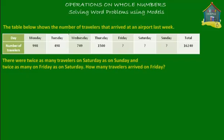The table below shows the number of travellers that arrived at an airport last week. We'll get to reading the table in a bit. But first, let's read the rest of the question. It says there were twice as many travellers on Saturday as on Sunday, and twice as many on Friday as on Saturday. So how many travellers arrived on Friday?